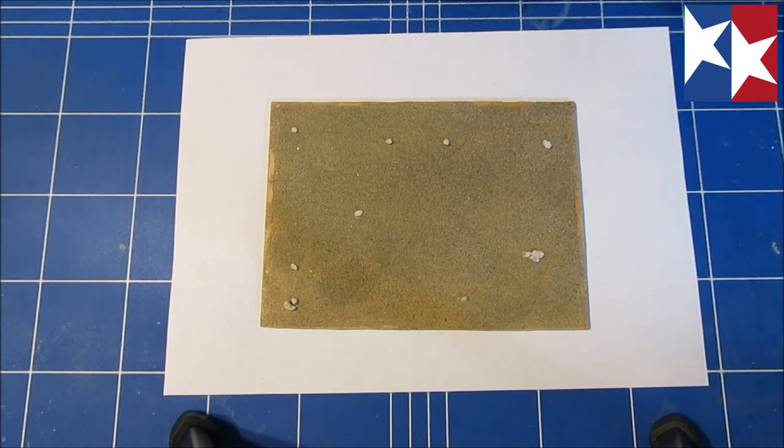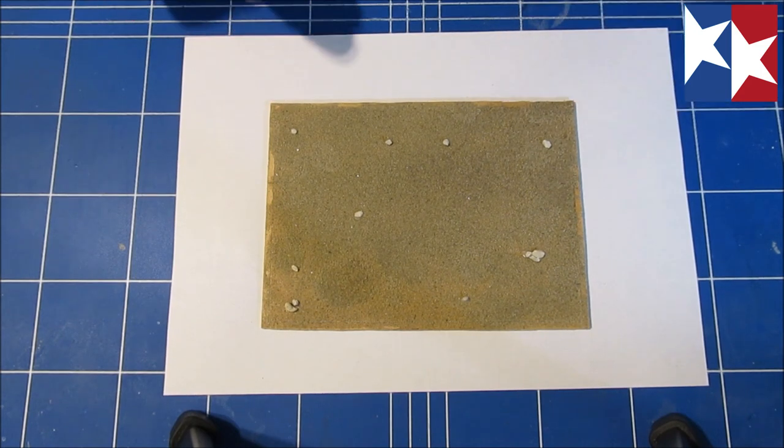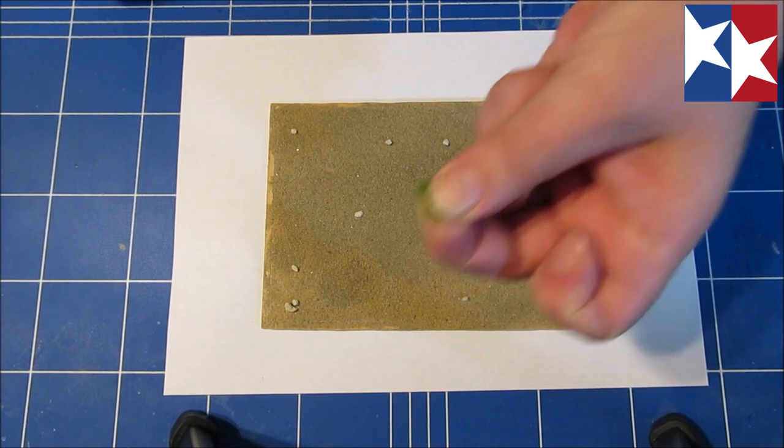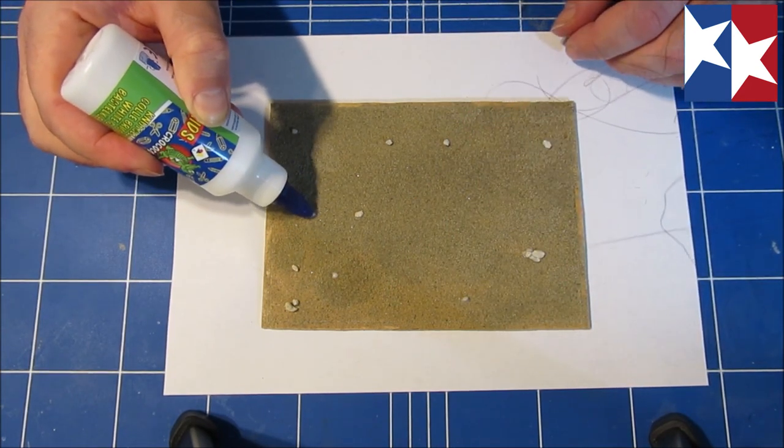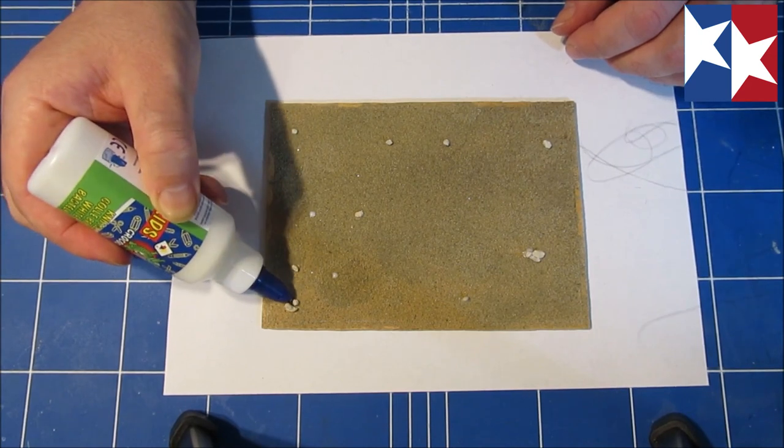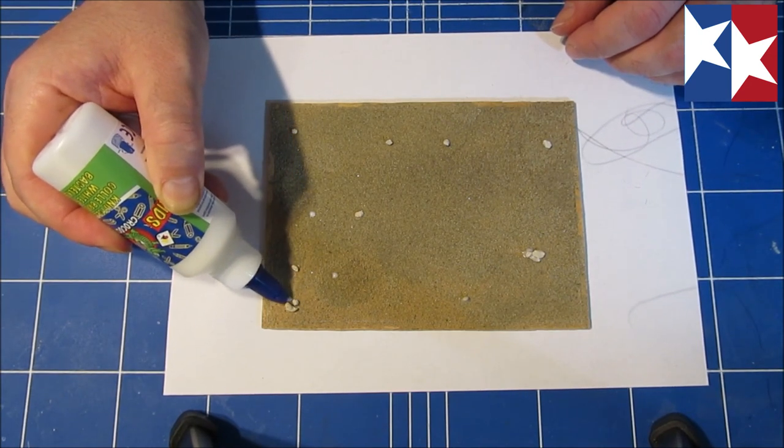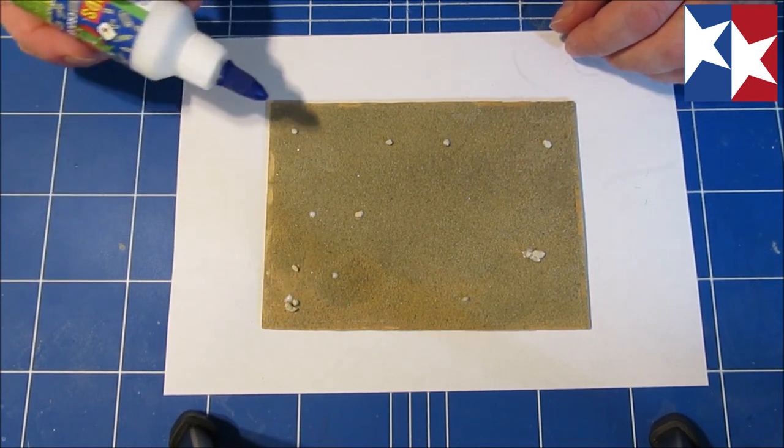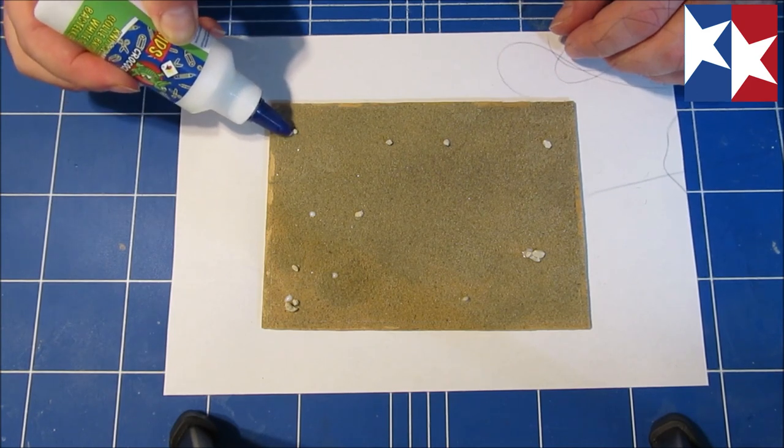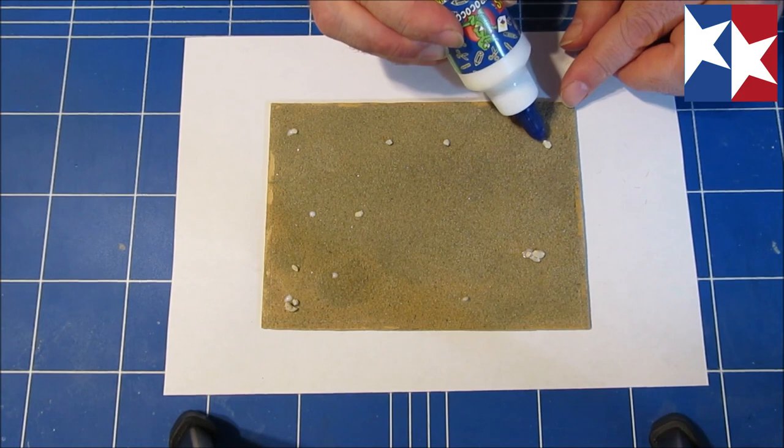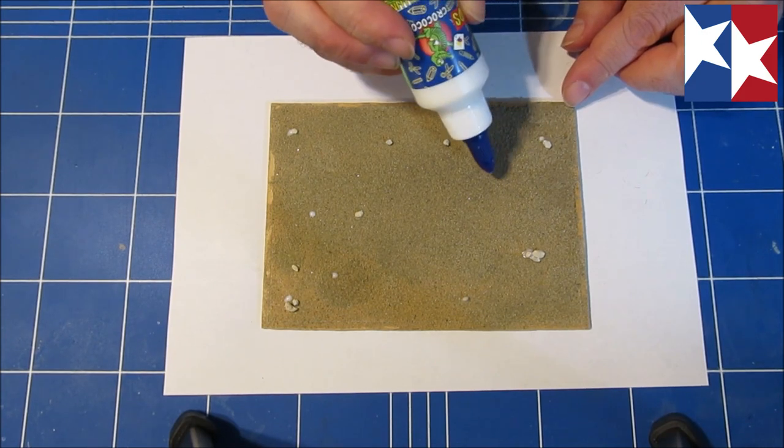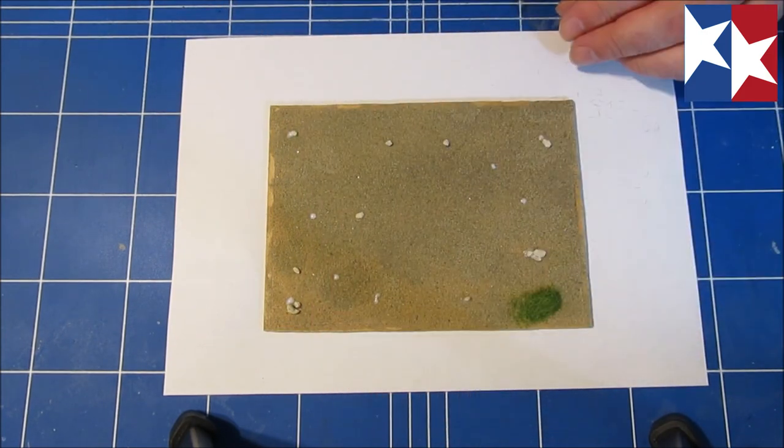And which brings us to the next thing to liven up this base. I have some static grass as well. I'm going to add a couple of blobs of glue. And then see if we can get some color in this base. And just sprinkle it on there.